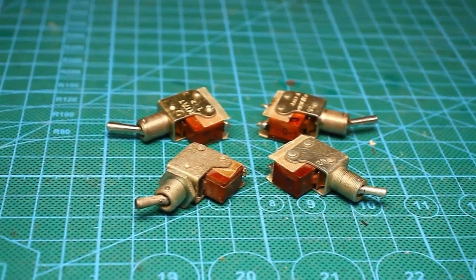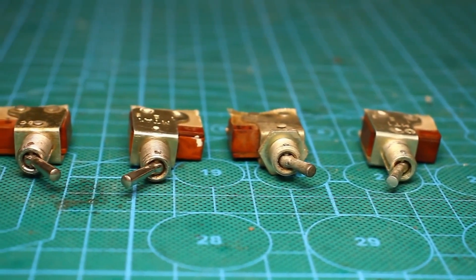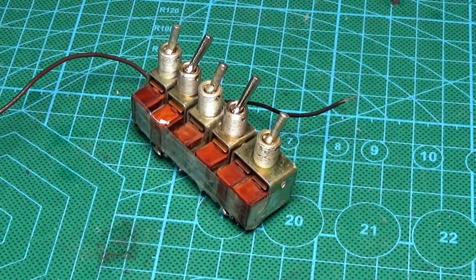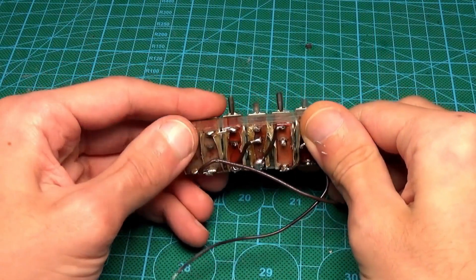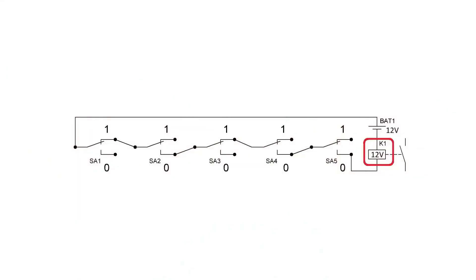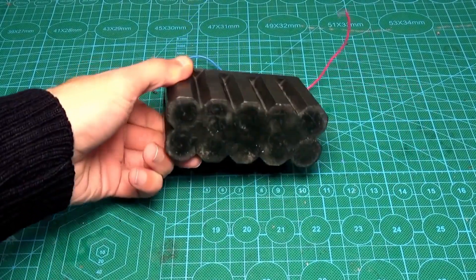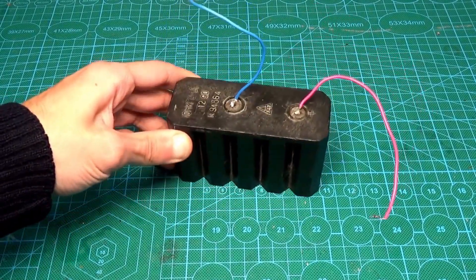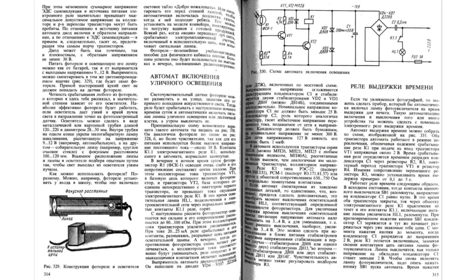As already noted, the number of switches, and consequently the complexity of the code, can be anything. The switches can be practically any type with three terminals. The main thing is that their switching current is higher than the current consumed by the load. In this case, the relay coils. As a power source, you can use any battery with a voltage of about 12 volts. At the same time, the voltage of the relay coil should also be around 12 volts.